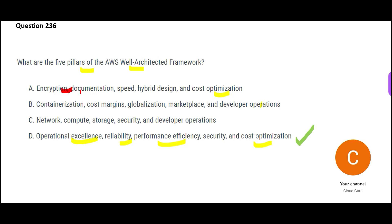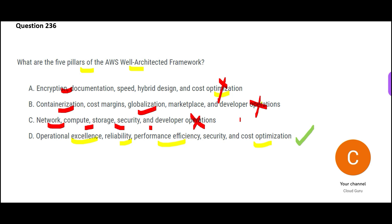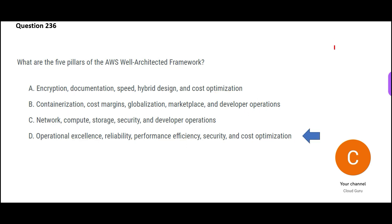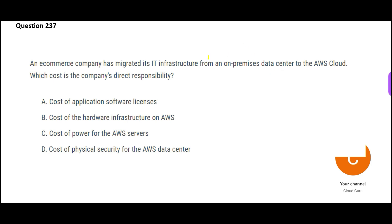Now let's look at the other options. Encryption is not mandated — you may not have any PII or personally sensitive data, so it's not a pillar. Containerization is a choice, not a best practice pillar. Globalization doesn't apply to everyone — some businesses like BharatPay or Paytm only operate in India. And network, compute, and storage are not pillars — they are entities that support the pillars. So the Well-Architected Framework pillars remain my final answer.